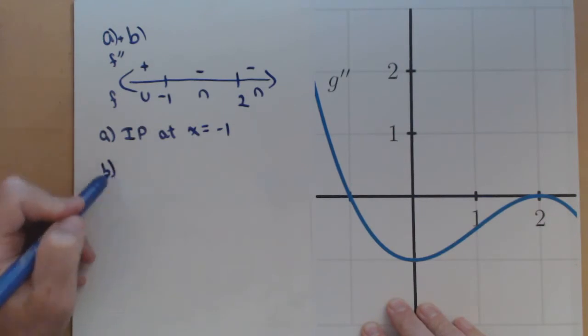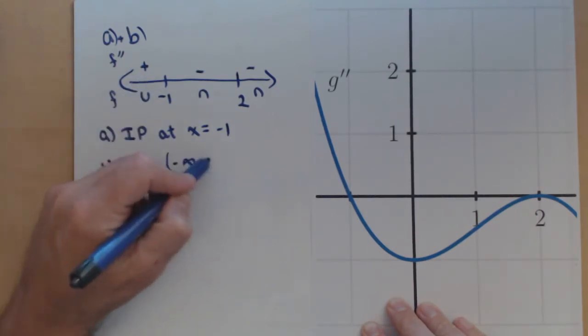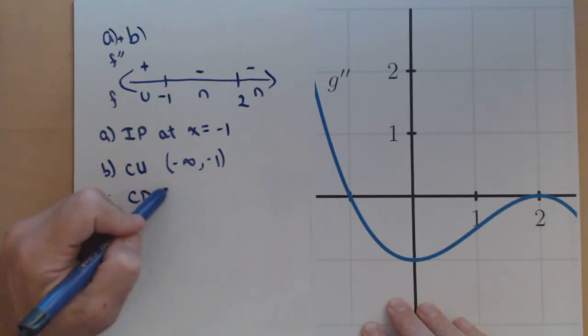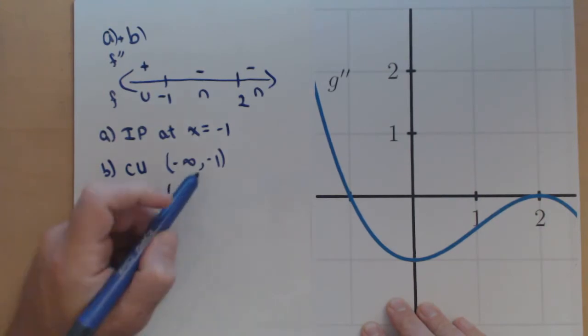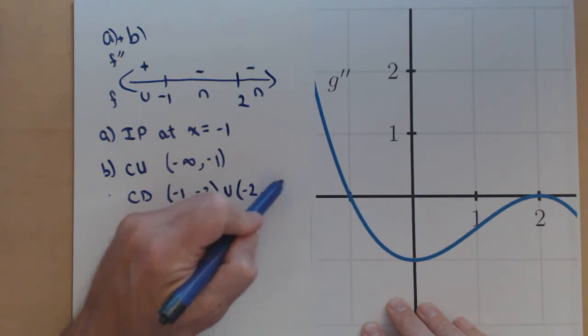We're going to describe the concavity. So we see that it's concave up wherever it's positive, so negative infinity to negative 1, and concave down from negative 1 to negative 2 and negative 2 to infinity.